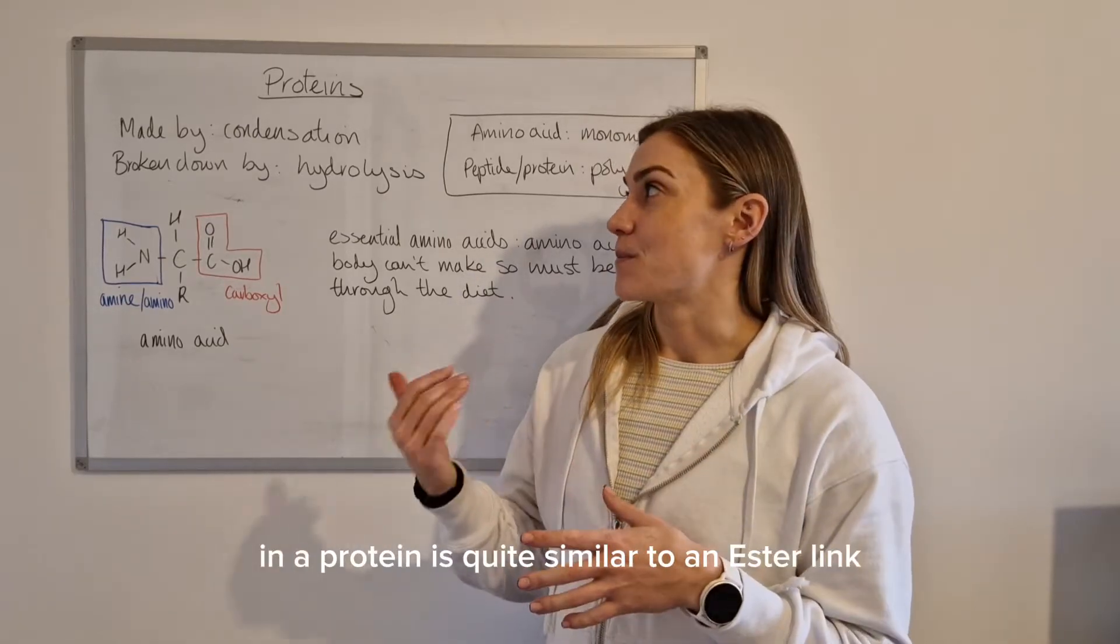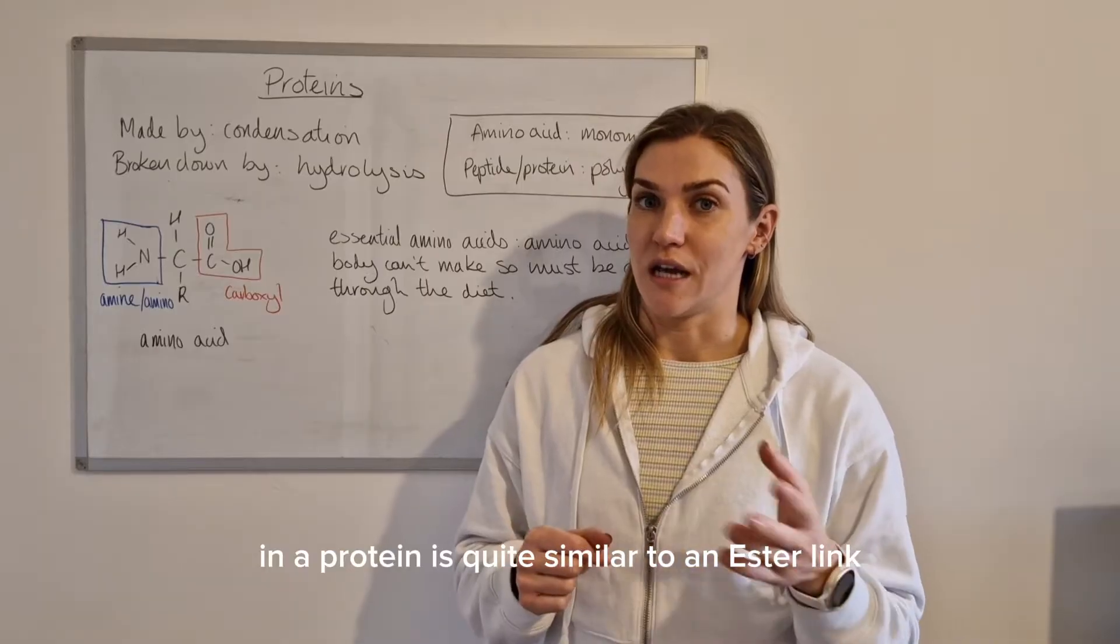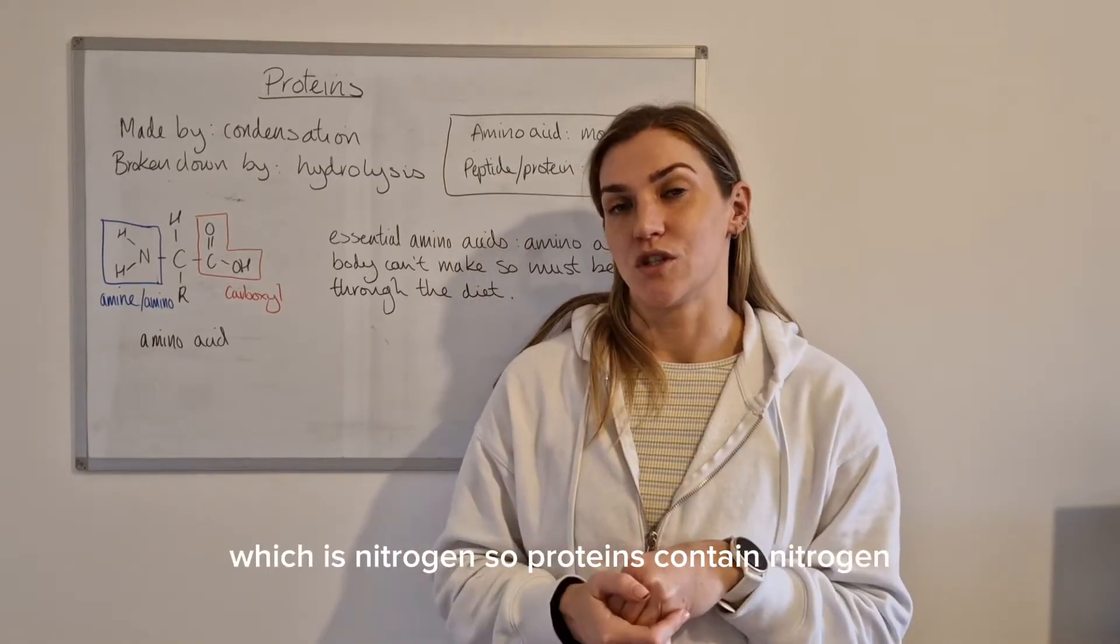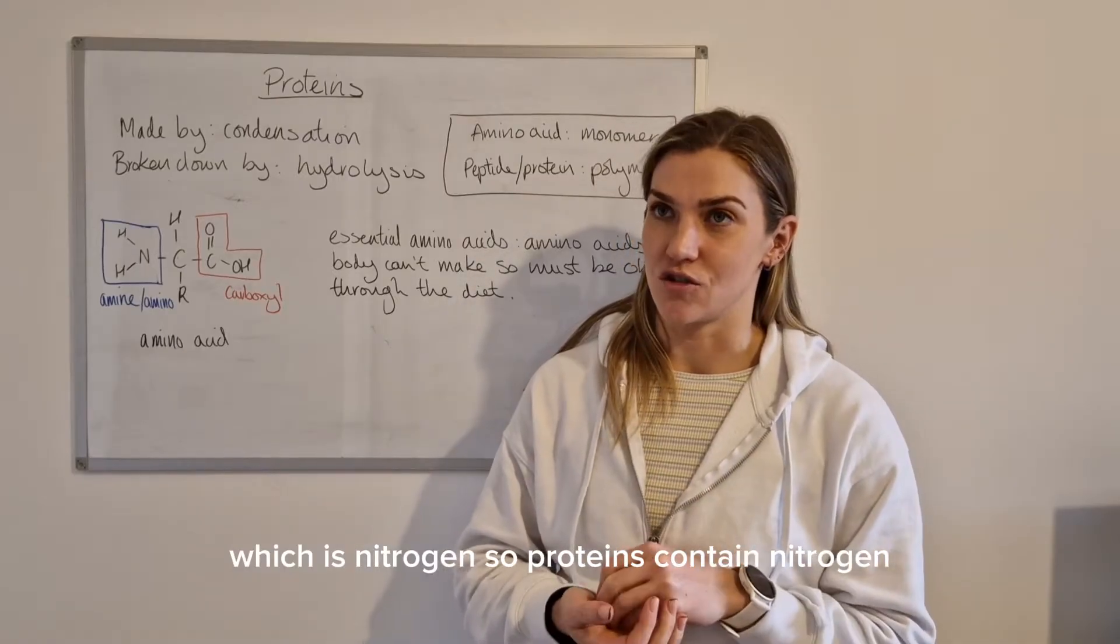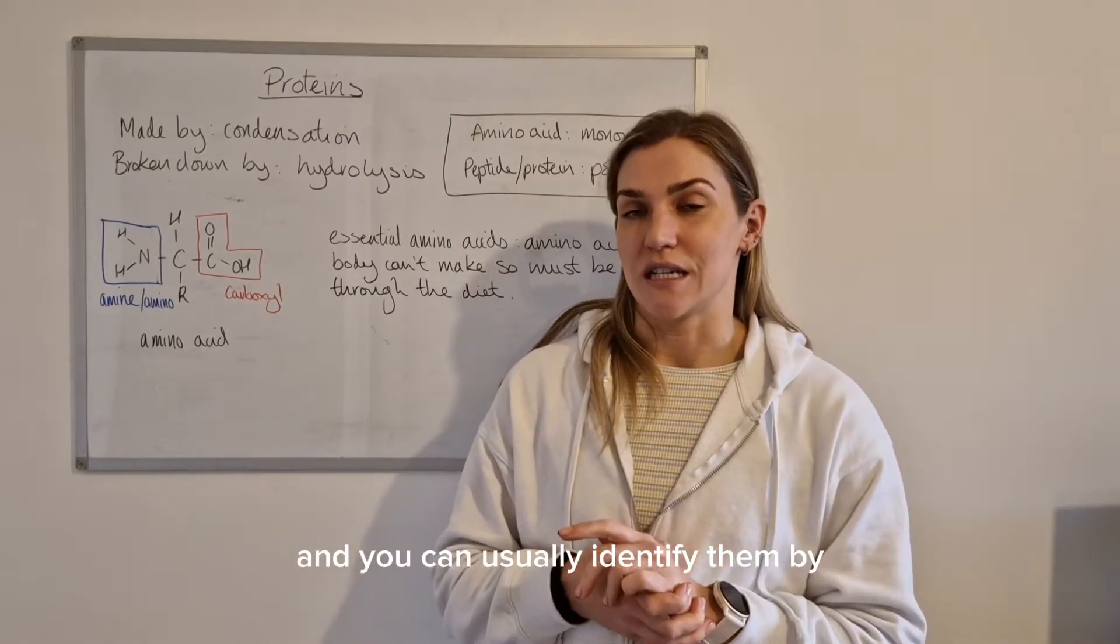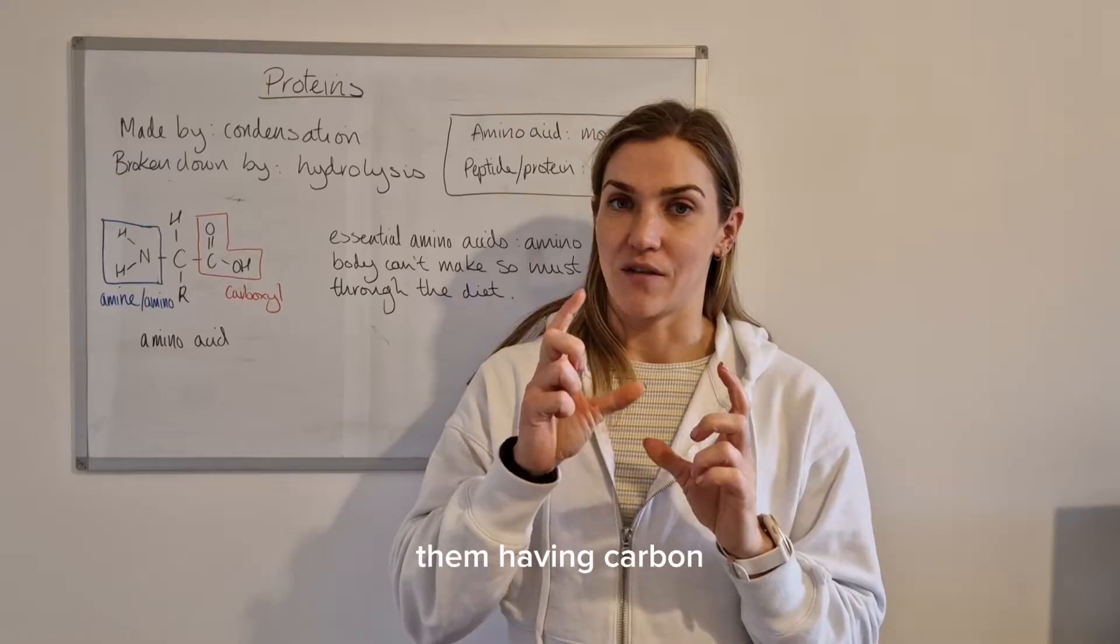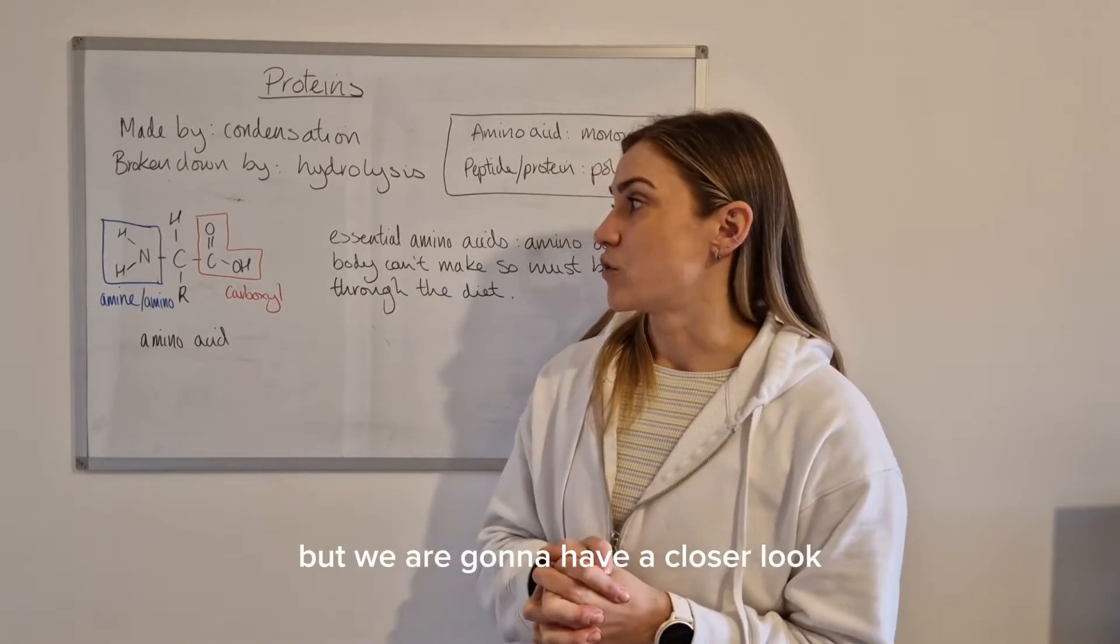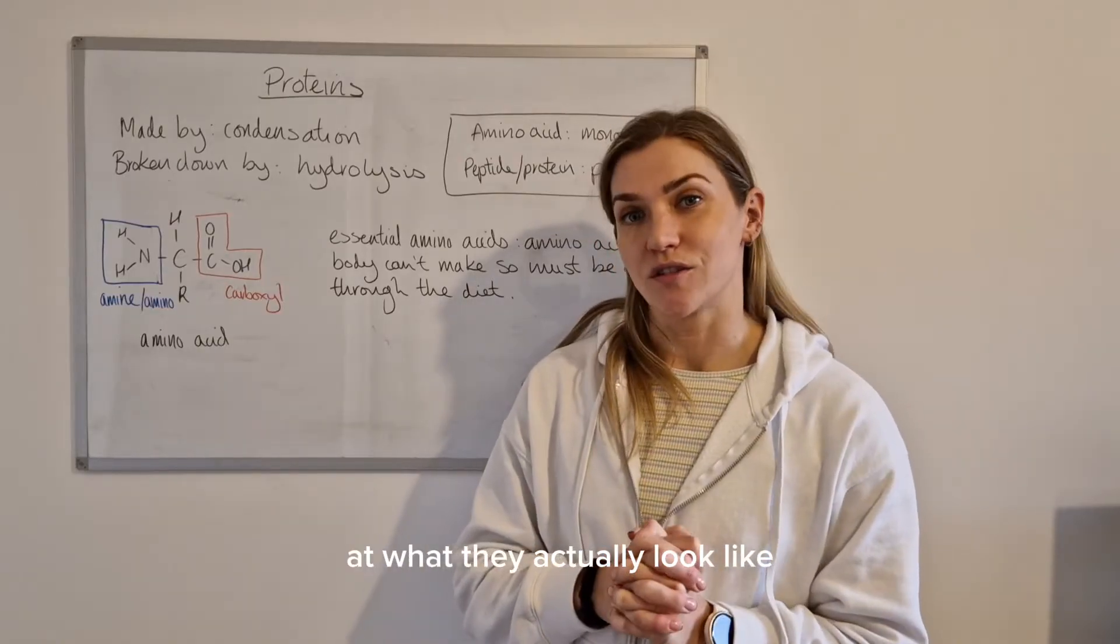The functional group in a protein is quite similar to an ester link but it's got a different element in it which is nitrogen. So proteins contain nitrogen and you can usually identify them by them having carbon, hydrogen, oxygen and nitrogen elements in them. But we are going to have a closer look at what they actually look like.